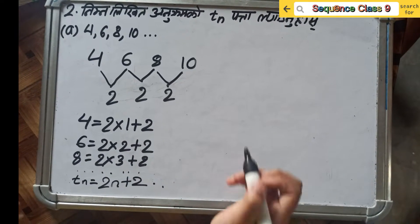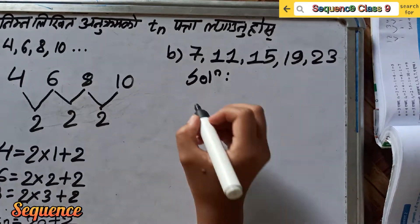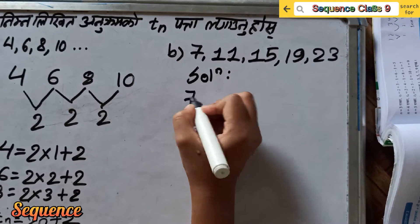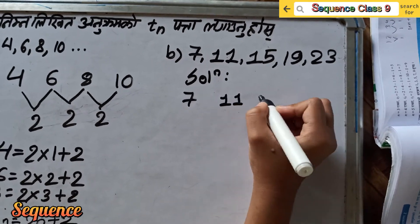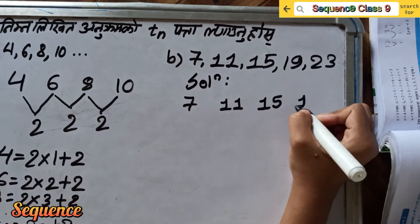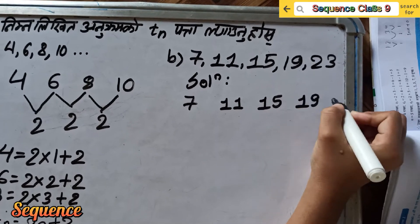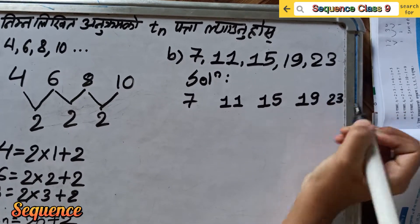So I am going to write the sequence: 7, 11, 13, 19, 23.